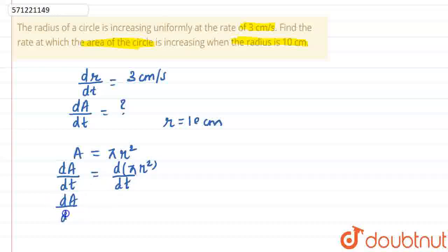as π is constant and r² differentiation is 2r.